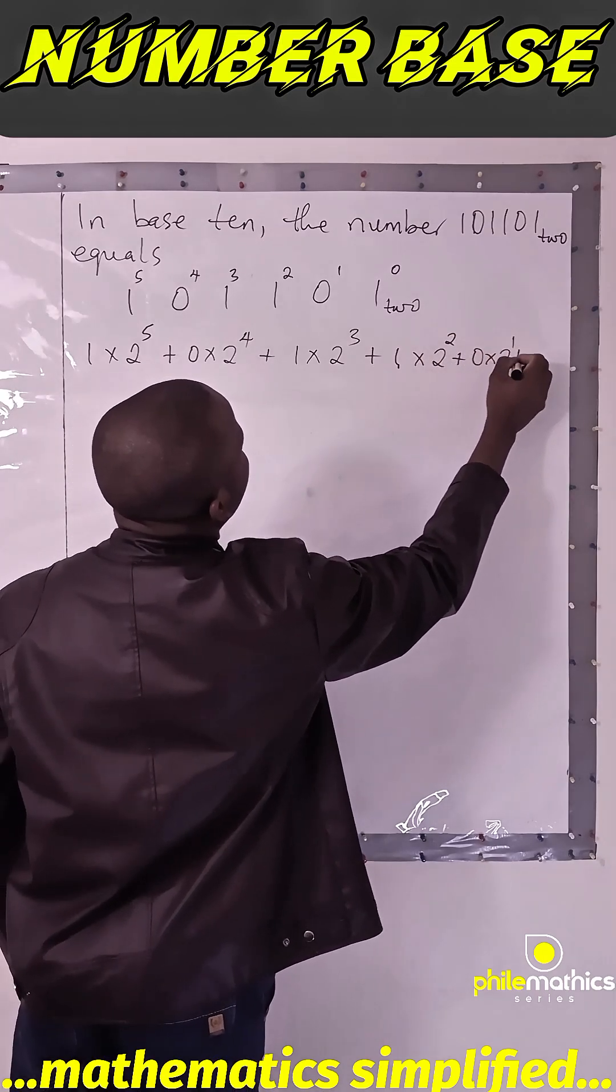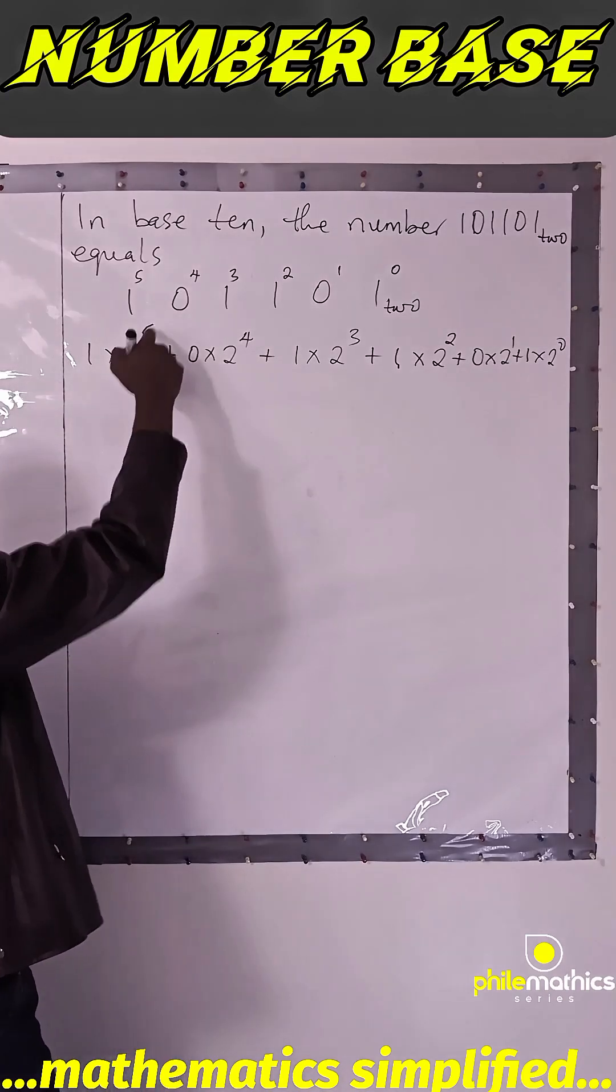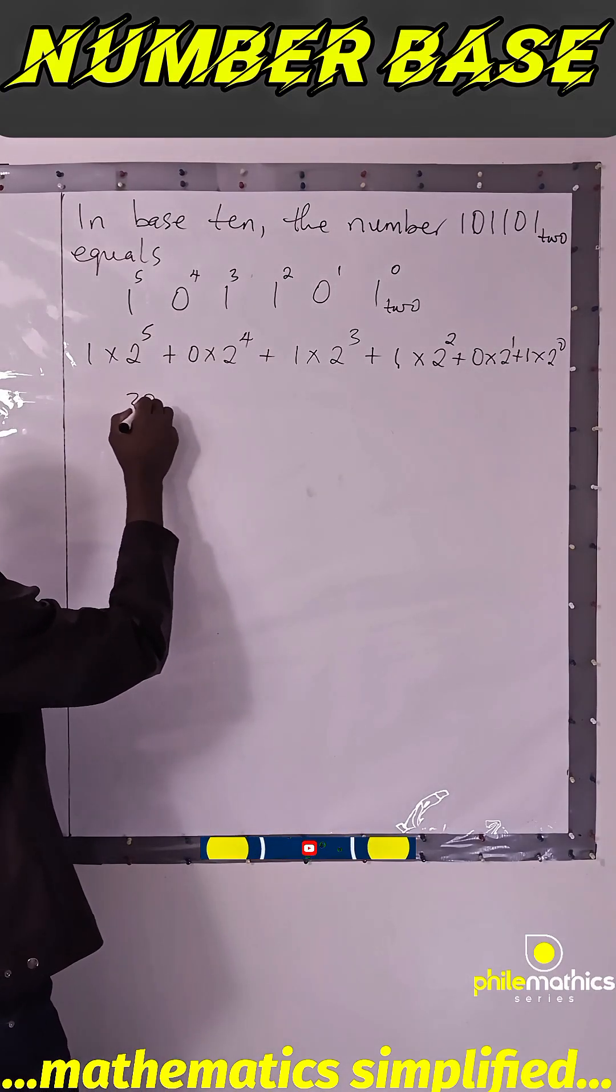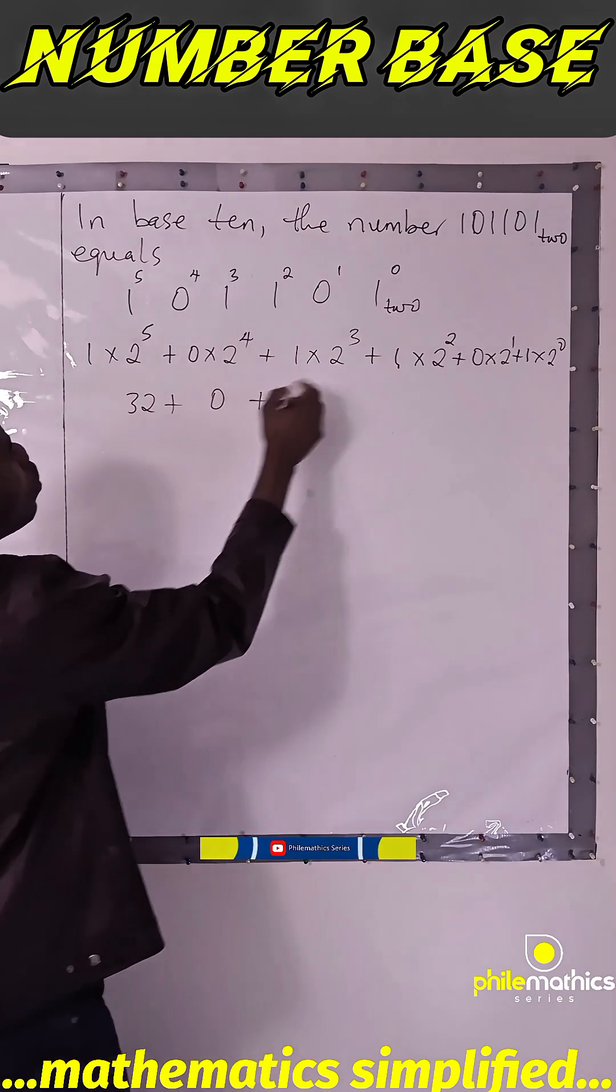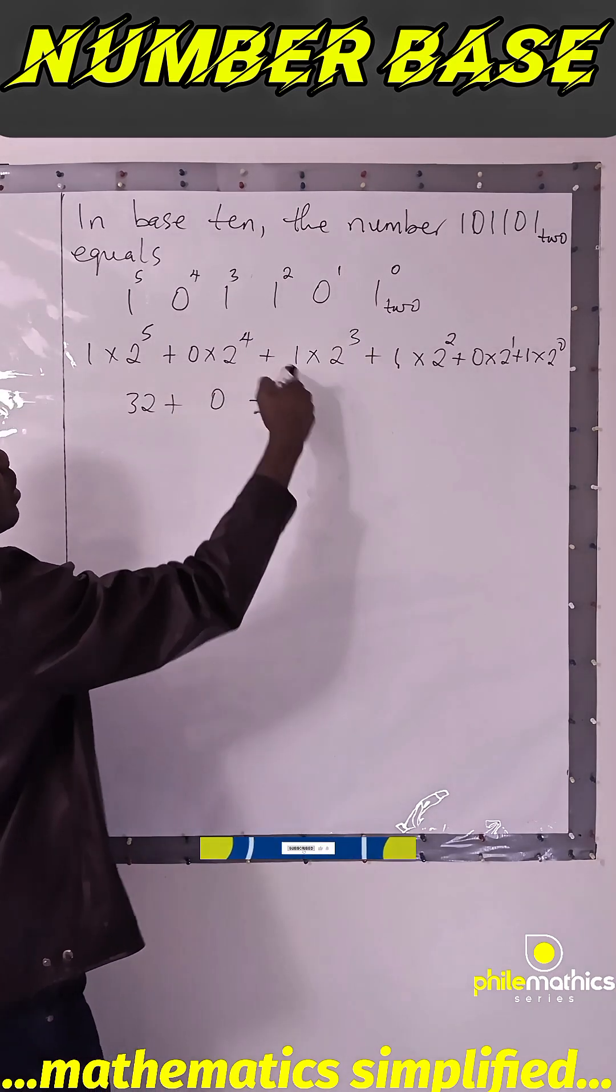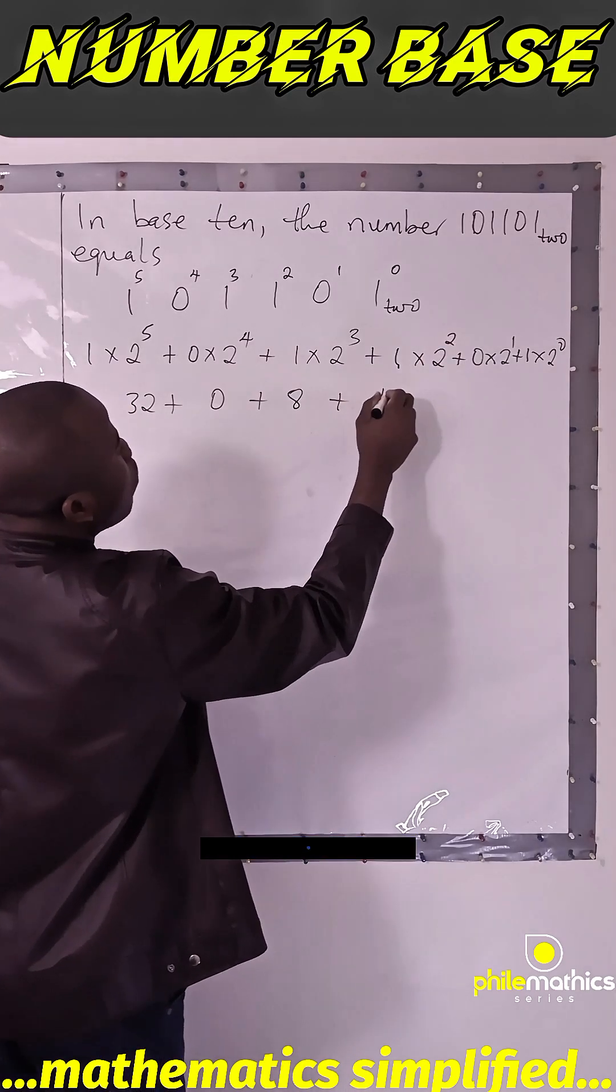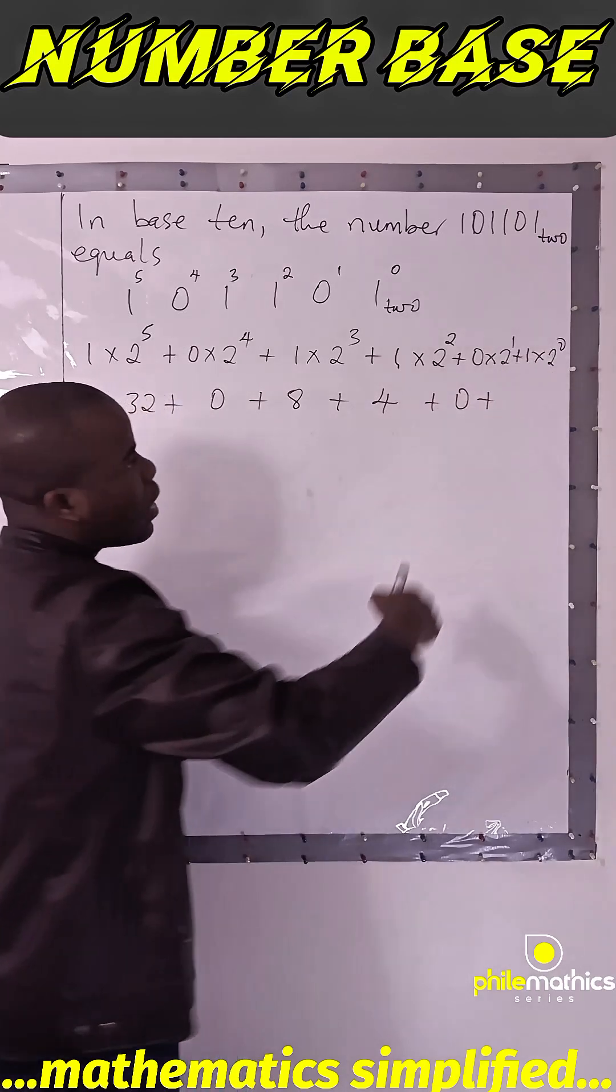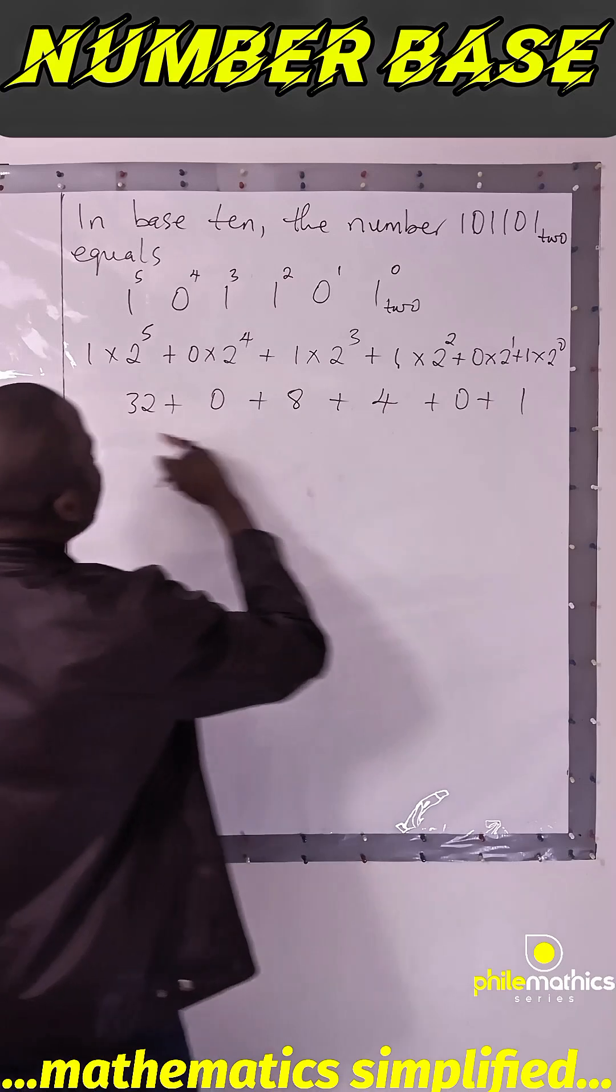2 to power 5 is 32, times 1, this is 32. 2 to power 4 is 16 times 0 is 0. 2 to power 3 is 8 times 1 is 8. 2 to power 2, 4 times 1, 4. 2 to power 1, 2 times 0, 0. 2 to power 0 is 1. Any number to power 0 is 1. Times 1 is 1.